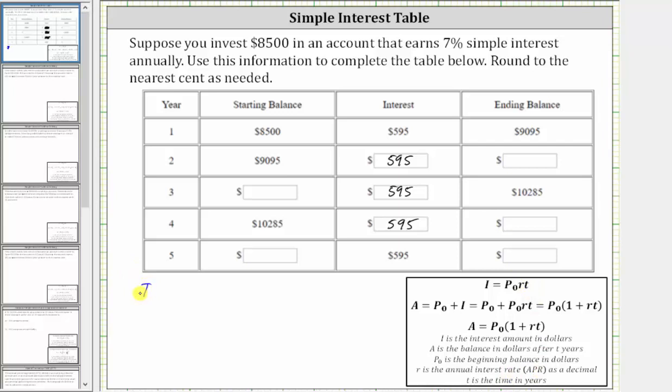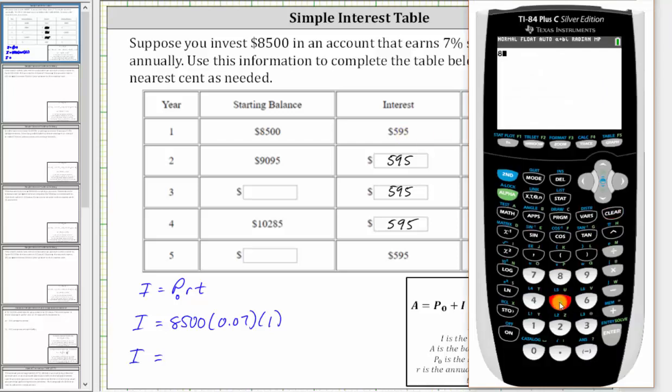If we use I equals P sub zero times R times T, we have I equals 8,500 times the rate as a decimal, which is 0.07 times the time in years, which is one. Let's make sure this product is $595. You have 8,500 times 0.07 times one, which does give us the amount of simple interest of $595.